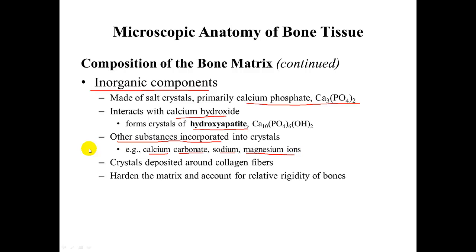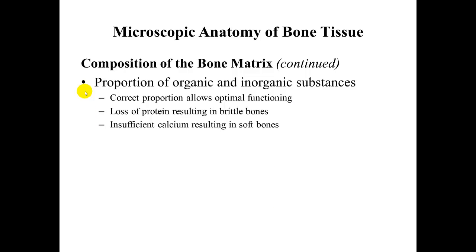The inorganic components are only deposited once the collagen fibers are already laid down. After they are deposited, they harden the matrix and give bones the rigidity we are familiar with. A key idea is that the hardness or flexibility of bones is based on the ratio of organic to inorganic substances — the correct proportion maintains the proper flexibility and strength.